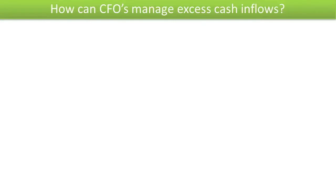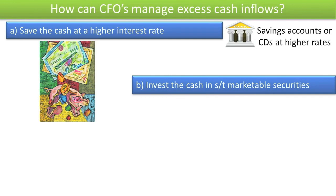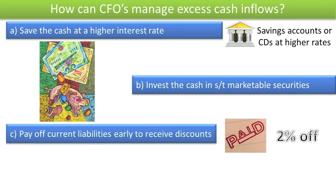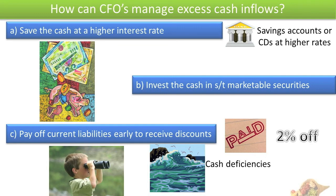In this example, the CFO should have predicted this cash flow surplus in advance and made appropriate plans for the excess cash until it was needed to pay off current liabilities in April. Those plans could include placing the excess cash in a savings account or buying a two- or three-month certificate of deposit that pays higher interest, investing in short-term marketable securities, or paying current liabilities off early within 10 days to receive a cash discount of 2% or more. It is essential that a CFO be able to foresee cash flow deficiencies and surpluses before they happen.